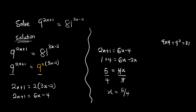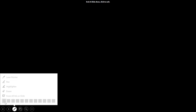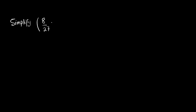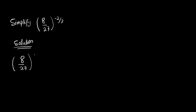Now let's look at one final example. We have to simplify the expression 8 over 27 raised to the power of negative 2 over 3. To solve this, we write down our solution. The negative power means that the whole expression 8 over 27 raised to the power 2 over 3 is divided by 1, or we rewrite the entire thing as 1 over 8 over 27 raised to the power 2 over 3.